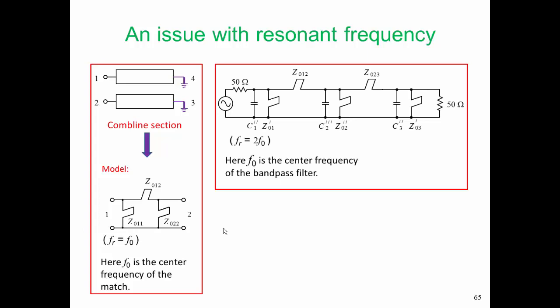With our filter, FR is equal to 2F0, which is telling us that the stubs are one-eighth of a wavelength long. So the F0s are different here. In one case, F0 is the center of the bandpass filter. In the other case, F0 is the center of the match for the parallel coupled line model. To answer this, we need to re-examine the development that led to the assignment of FR.